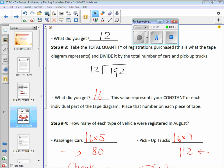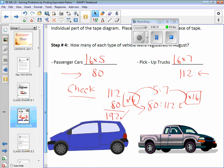Stop for a minute. I've got to redo this one. I forgot where we left off. When we did 12 into 192, we got a constant of 16. Then to figure out how many there were of each vehicle, we took 16 times the amount of boxes for passenger cars and got 80. 16 times the number of boxes in the tape diagram for pickup trucks, 112.